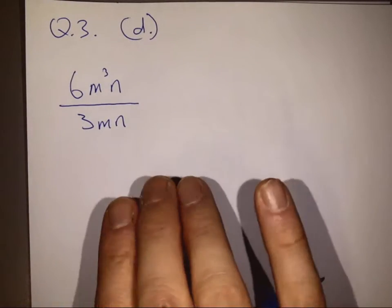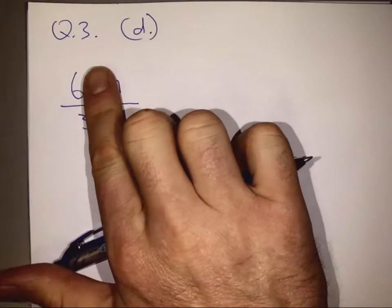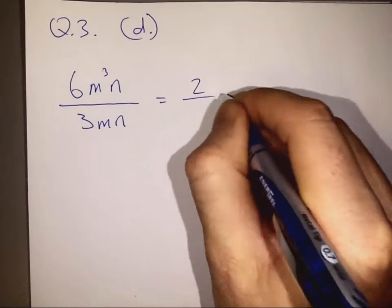OK. And we're going to look at the numbers first. 6 over 3 becomes 2 over 1.